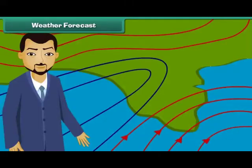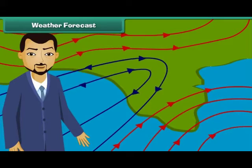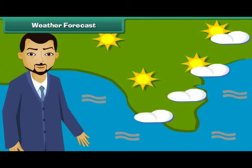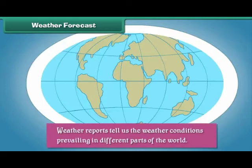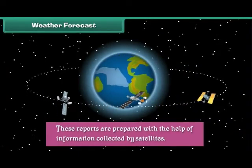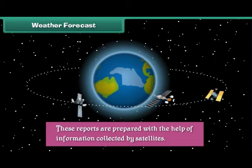Prediction of the future weather conditions of an area is called weather forecast. Weather forecast predicts the temperature, humidity and possibility of rainfalls in a particular area in the near future. Weather reports tell us the weather conditions prevailing in different parts of the world. These reports are prepared with the help of information collected by satellites.